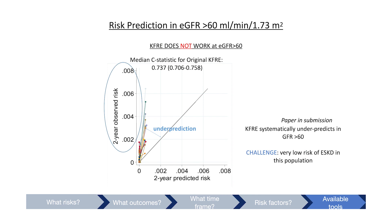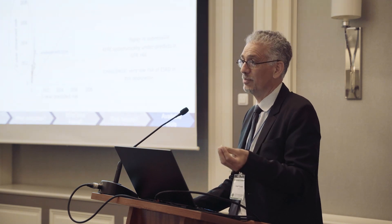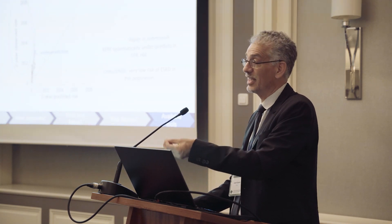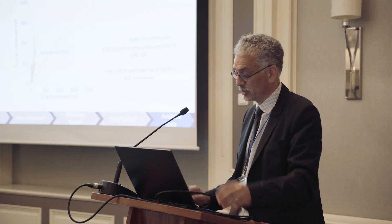Above a GFR of 60, KFRE doesn't work — it was developed for below 60. Above 60, you get a range of risk, but when the predicted risk is 0.001 versus 0.002, it's a little weird to be acting on that. It's not the relevant outcome for someone with a GFR of 70 to hear they'll go to failure in two to four years — it's a long road, and nonlinear things will happen.